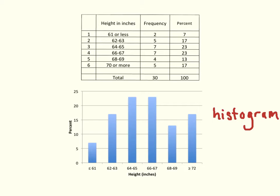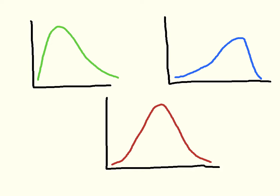So this is a histogram — this is the basis of distributions — and now we're going to talk about some characteristics of distributions. The shape of a distribution can tell you a lot about the data. There are a number of different kinds of distributions, and looking at these two on the top, you can see that these distributions have tails, meaning that one end extends further than the other. This one has a tail on the right, and this one has a tail on the left.